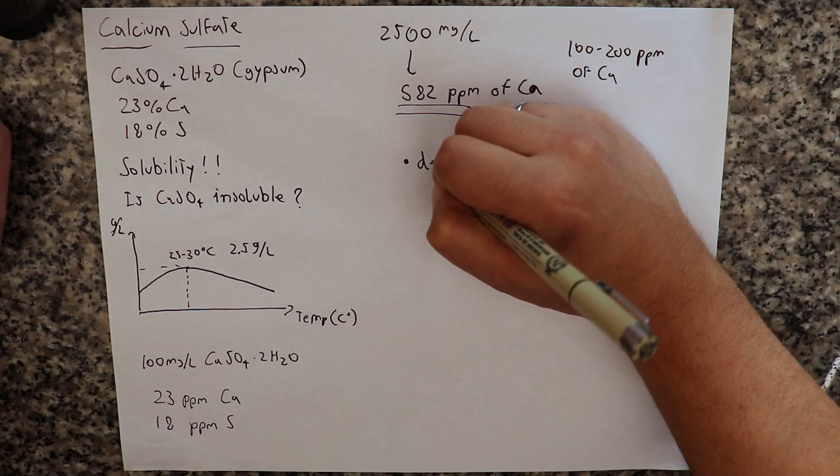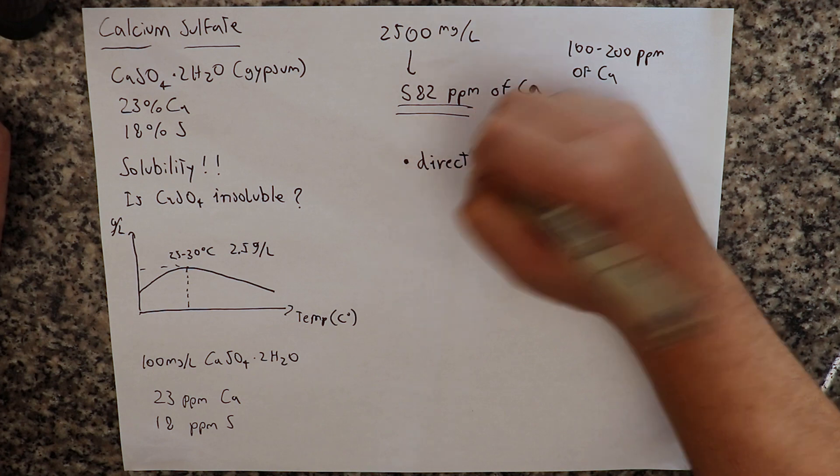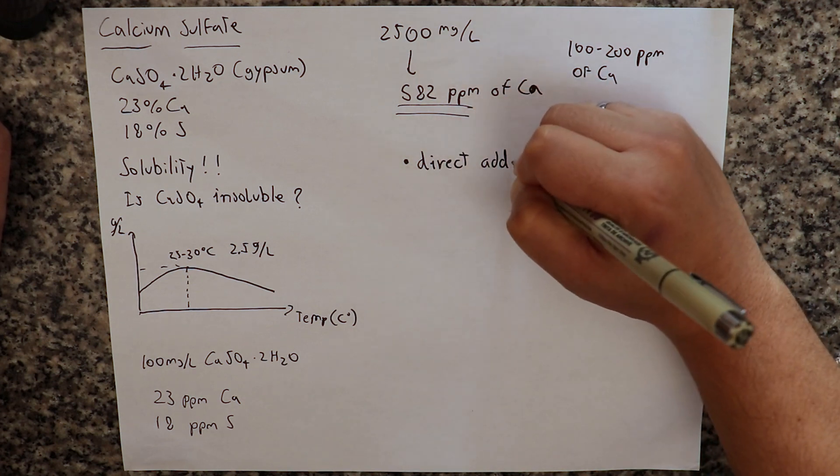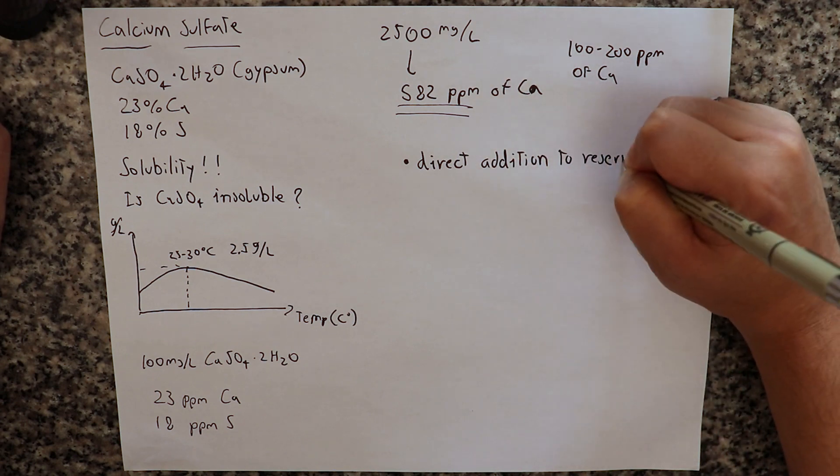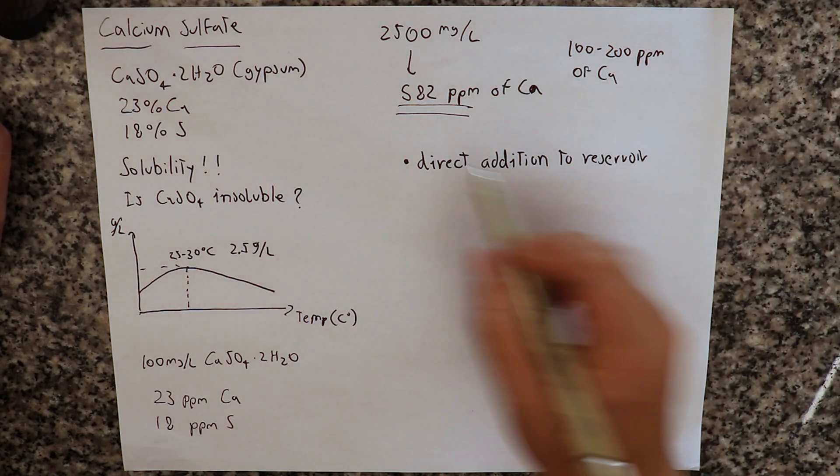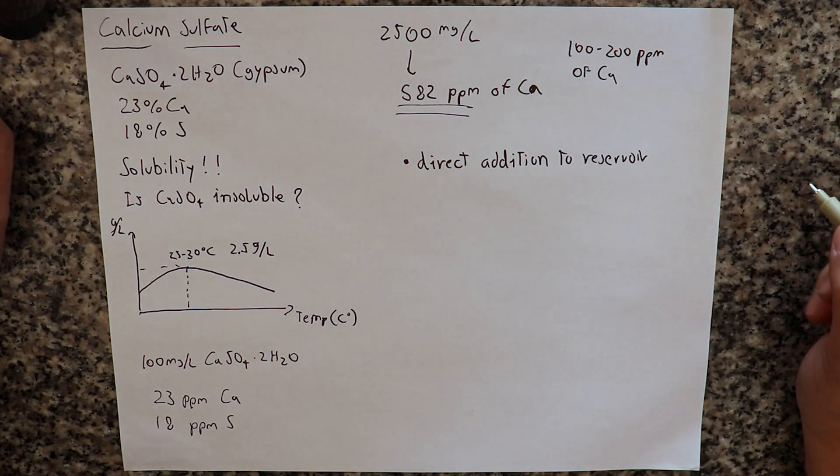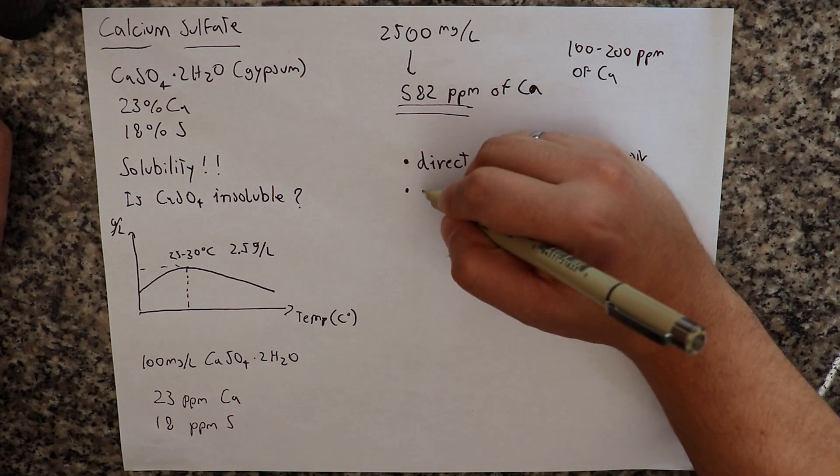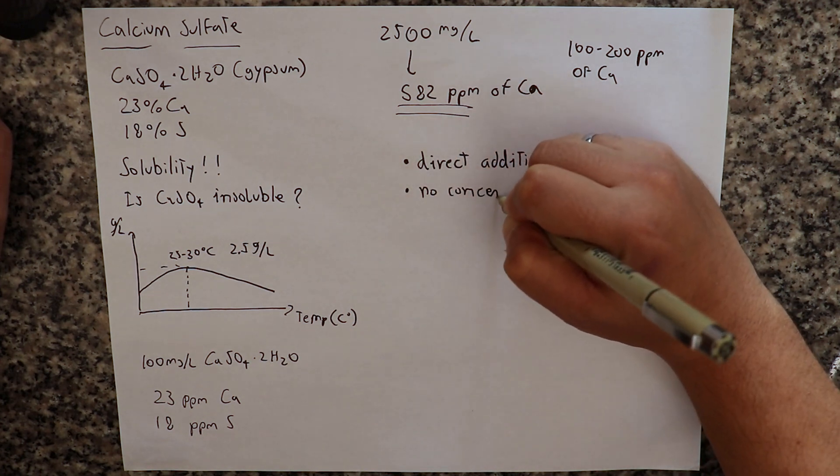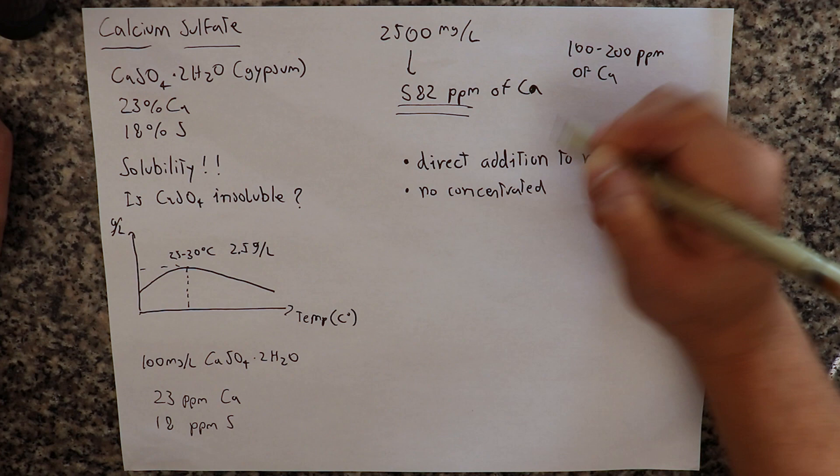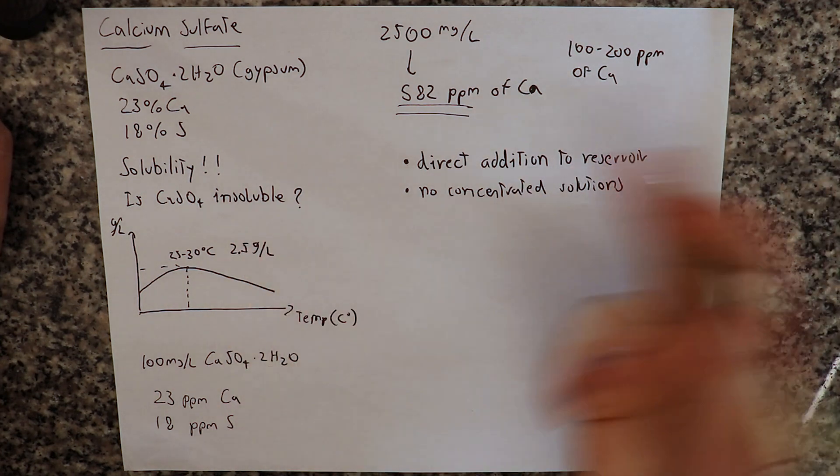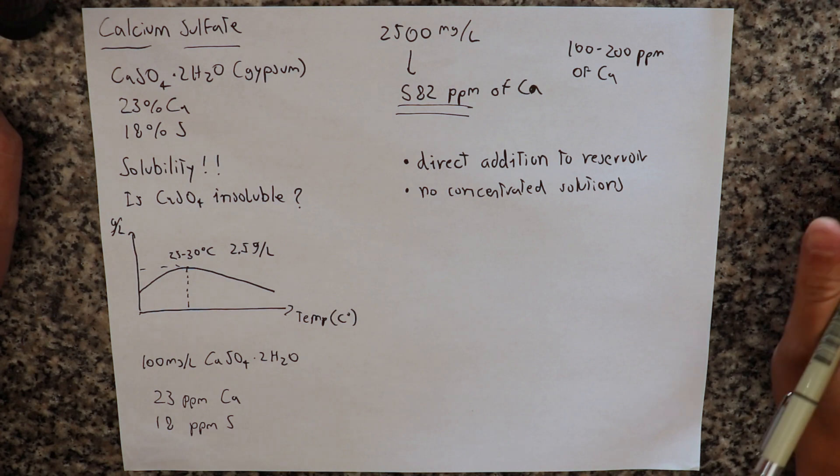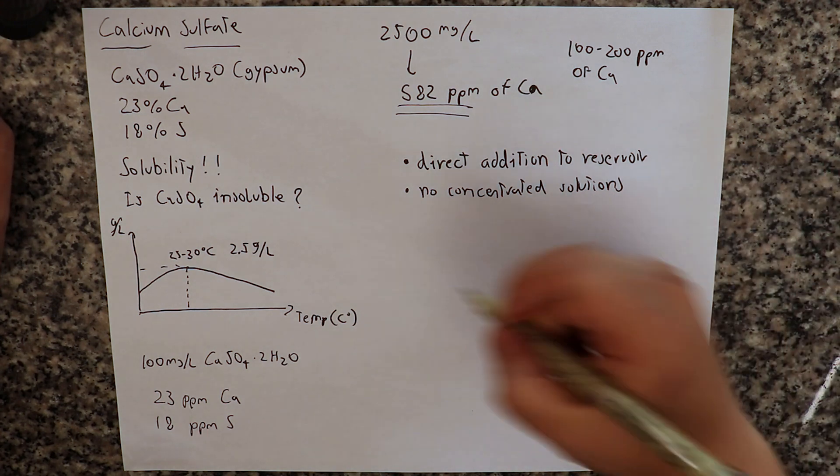So its use has some caveats. The first is that you need to do direct addition to reservoirs. So you need to add the calcium sulfate directly to your final nutrient solution. You cannot have concentrated nutrients, so no concentrated solutions. You cannot prepare a stock solution and then dilute it with an injector. You need to add this directly to a reservoir.